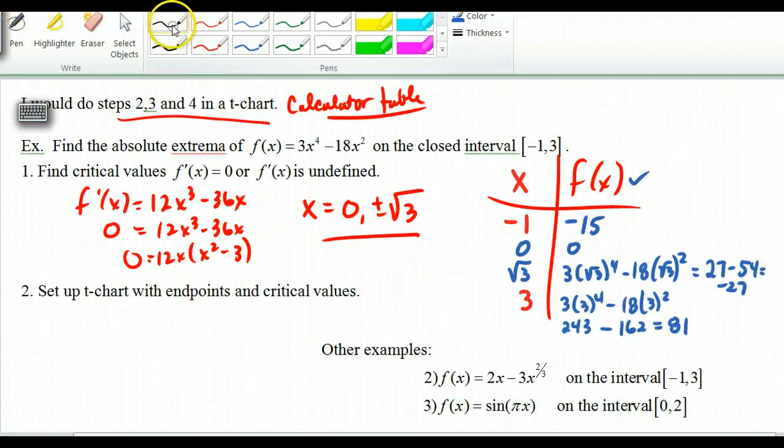Now what I'm going to do is I'm going to plug those in, not into f prime, but we're going to plug it into f. And so if I take negative 1 and plug it into here, so here's my t-chart. If I take negative 1, I plug it in, I get negative 15. And then remember, I'm plugging into f, not f prime, 0, 0, square root of 3, negative 27, and 3, 81.